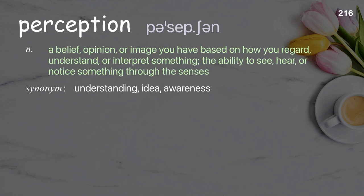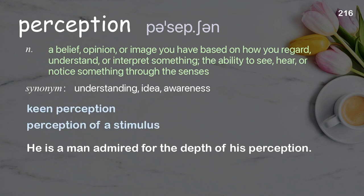Perception: a belief, opinion, or image you have based on how you regard, understand, or interpret something; the ability to see, hear, or notice something through the senses. Examples: keen perception; perception of a stimulus. He is a man admired for the depth of his perception.